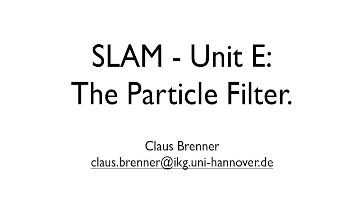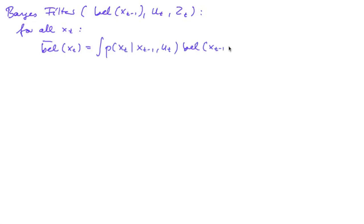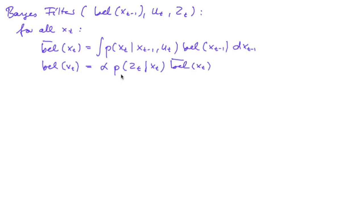Welcome to unit E, which will be about the particle filter. Let's first have a look at our base filter again, which takes our old belief, the control, and our measurement, and from that first computes the prediction, which I will now give in a continuous form, and then the correction, which is our predicted belief multiplied by the probability of our measurement under the condition that we're in the state Xt. And then we return our new belief.